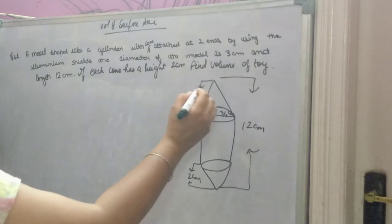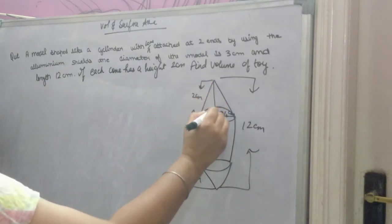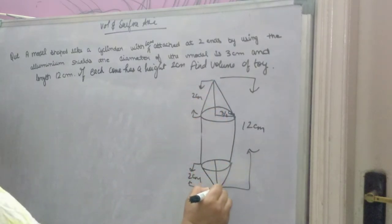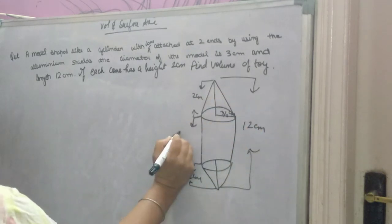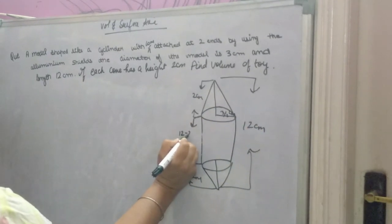Now, this height is 2 cm. This is also 2 cm. The total is 12, which means the height of the cylinder will be 12 minus 2 into 2.